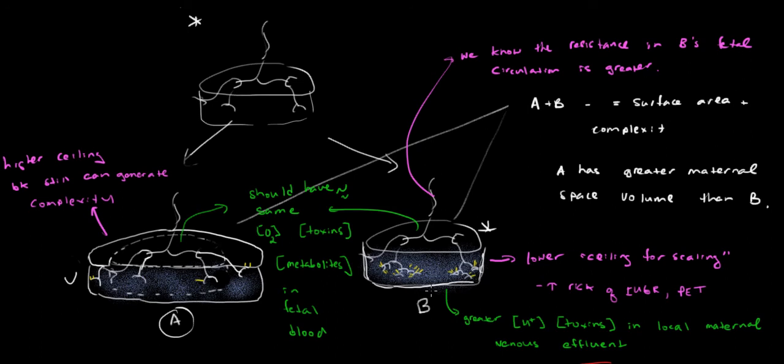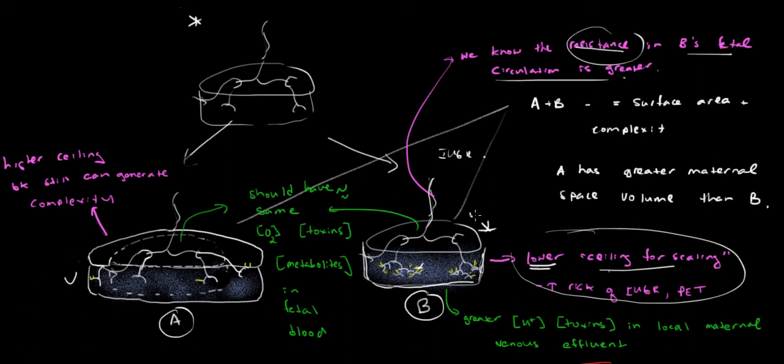But in the other model, this is your early onset IUGR model. Something happens that the volume is defined. Nature says you cannot go beyond this volume. The volume is circumscribed, held constant, and the only way the fetus could upscale his surface area is by increasing the complexity. That's B. So what's the difference between A and B? B will be like an early onset IUGR placenta. One consequence is that the resistance in B's fetal circulation is greater. In these early onset IUGR cases, the resistance in the fetal circulation is going to be greater.